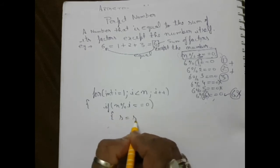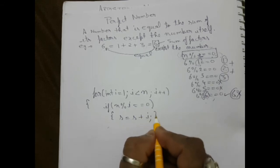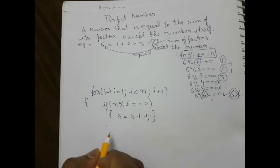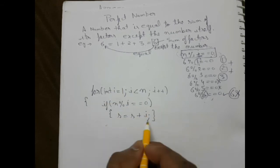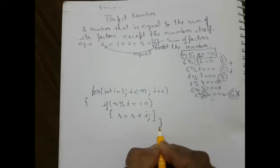s equals s plus i. That is the sum of the factors. These are the statements. The if is over, and then I close the for loop. Now I write the program. Class perfect, then public void check.